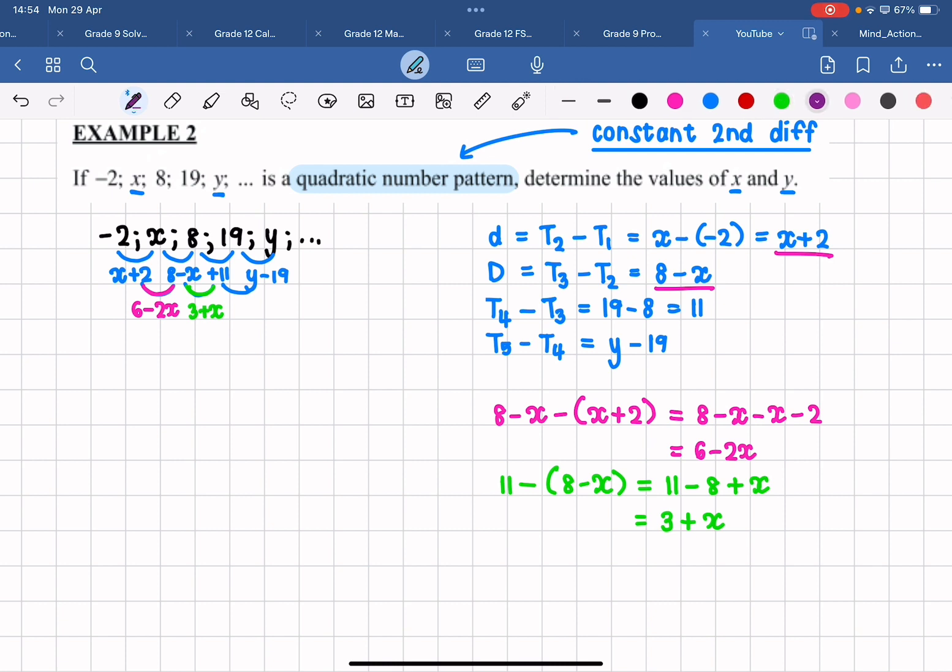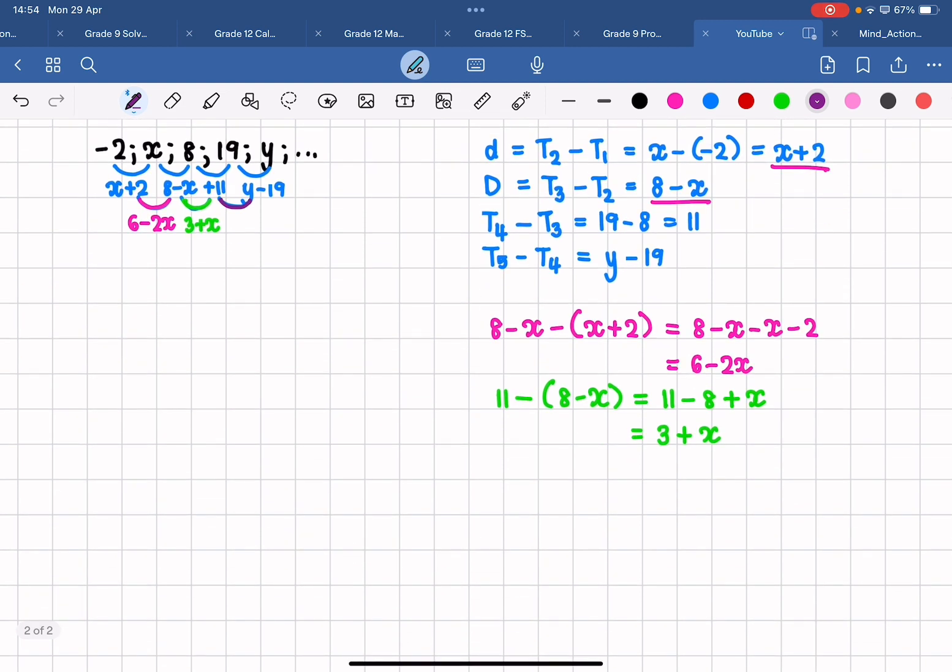Then for my third second difference, I'm going to have to take my fourth first difference and subtract my third first difference.